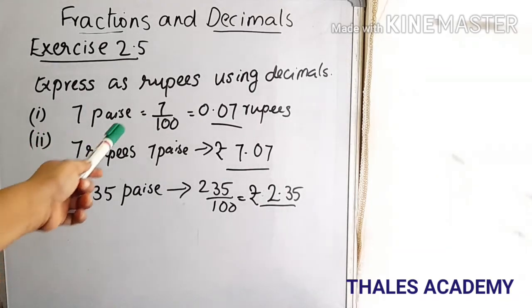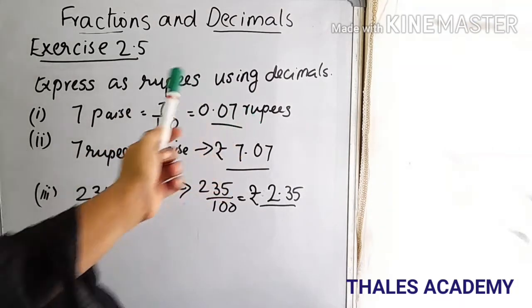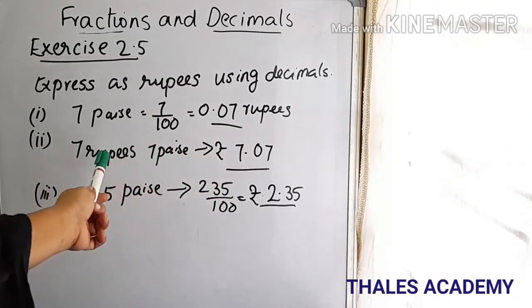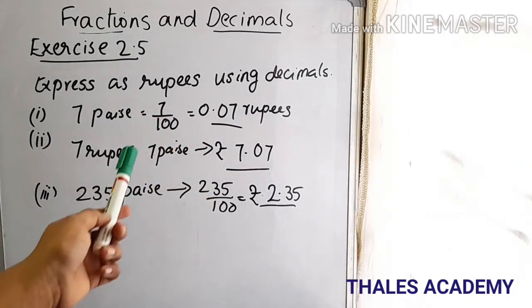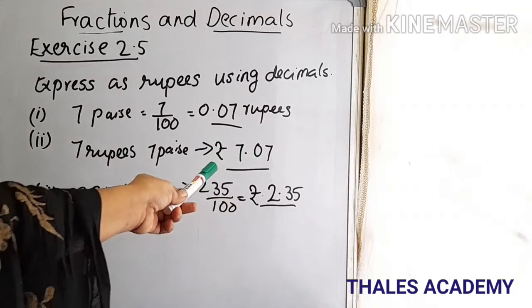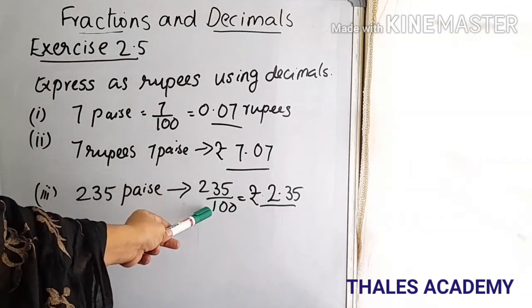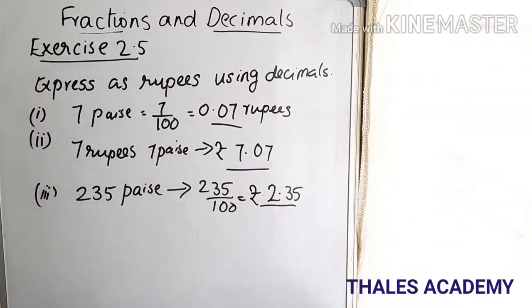Second problem: Express as rupees using decimals. First, 7 paise can be written as 7/100, that is 0.07 rupees. Second, 7 rupees 7 paise can be written as 7.07 rupees. Third, 235 paise can be written as 235/100, which equals rupees 2.35.